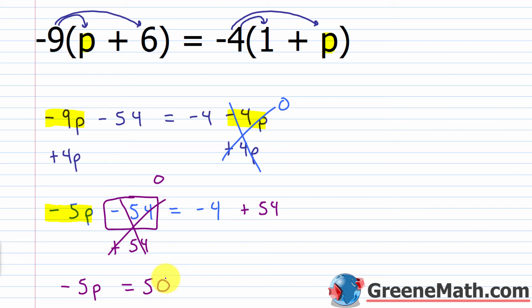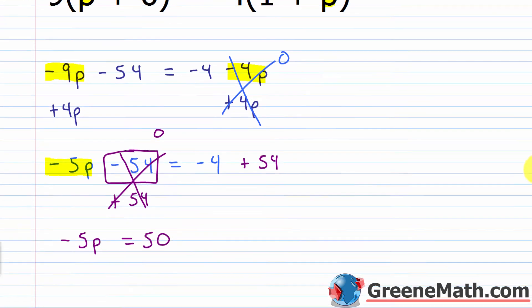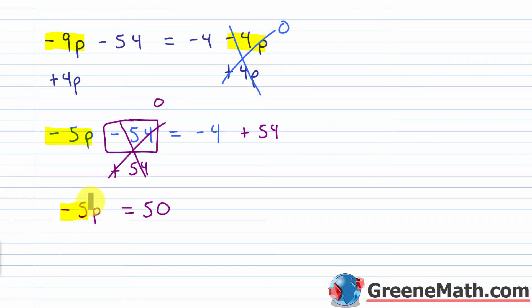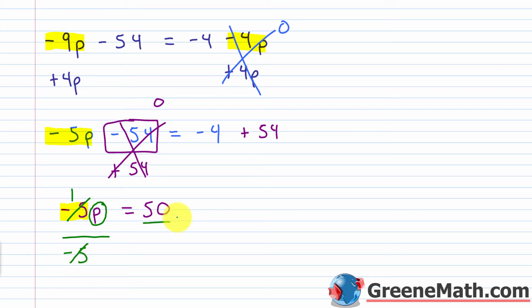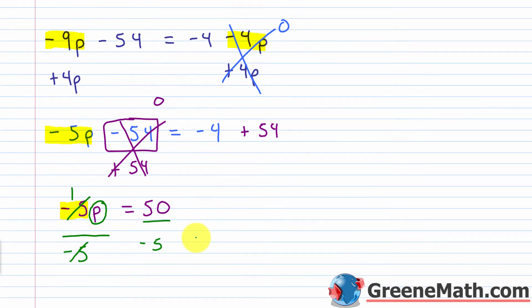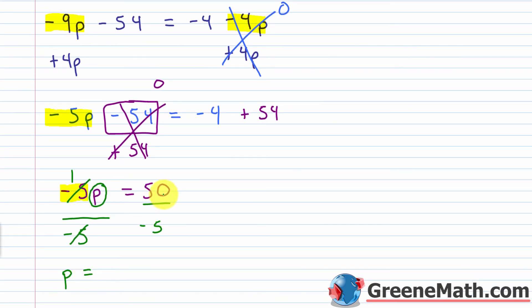Now I isolate the variable. I have negative 5P equals 50, so I need to get rid of that negative 5 coefficient. Since negative 5 is multiplying P, I divide both sides by negative 5. Negative 5 over negative 5 is 1, and 1 times P is just P. On the right, 50 divided by negative 5 is negative 10. So the solution is P equals negative 10.